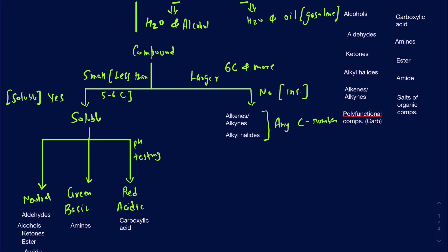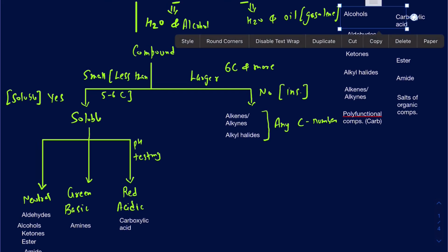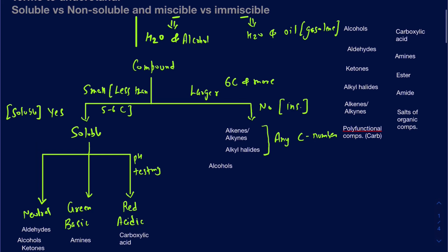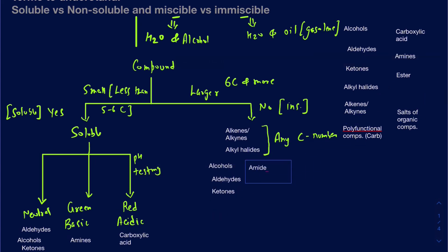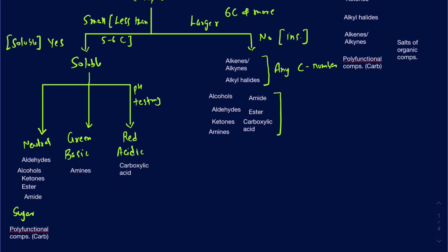In addition to those, you could also have compounds with functional groups like alcohols, carboxylic acids, aldehydes, amides, esters, and amines that are also insoluble — as long as they have maybe six carbons or more. Because as soon as you start getting more than six carbons, the hydrophobic effect takes priority over polarity, so they don't really dissolve in water.